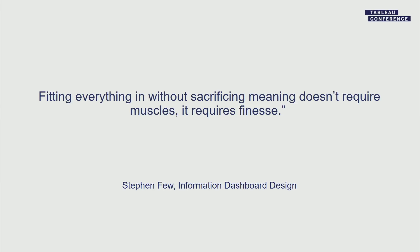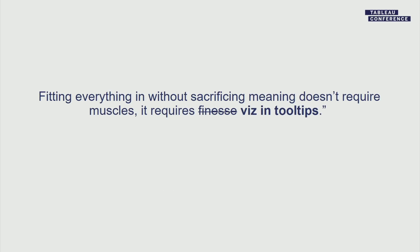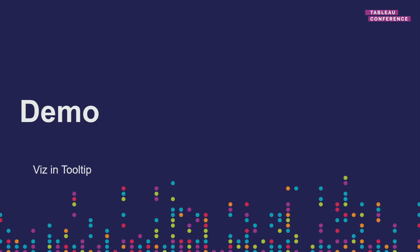Let's start with a line from Stephen Few's book, Information Dashboard Design. It's about fitting information on a dashboard or in a visualization — it doesn't require muscles, it requires finesse. I'd switch that to: you need Viz in Tooltips. We're always struggling to figure out what goes where. With Viz in Tooltips, there's always that secondary place where your information can go.